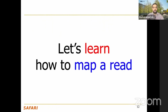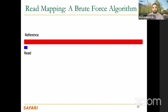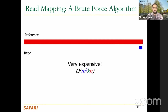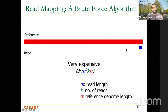How do we map a read? A brute-force solution would go through the reference genome one position at a time, checking if each read is similar at each location. However, this is very expensive because you use dynamic programming to examine similarity, which takes quadratic time. If the reference genome length is N and the read length is K, that is already a huge workload — especially for something like the Japanese flower with its very long reference genome.